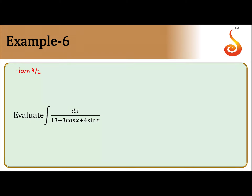Let tan(x/2) = t. We get dx = 2dt/(1 + t²), sin x = 2t/(1 + t²), and cos x = (1 - t²)/(1 + t²).